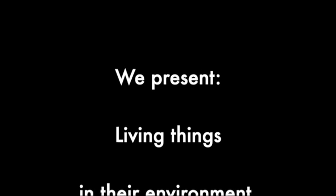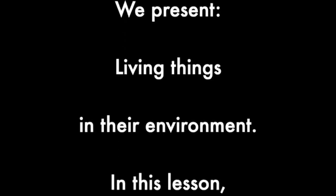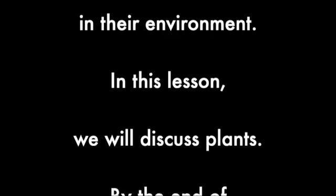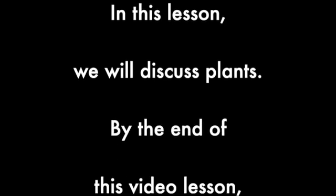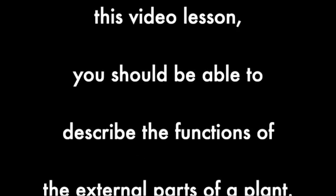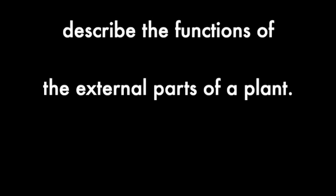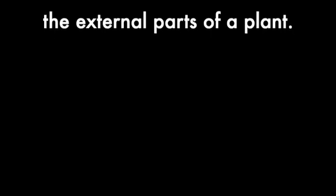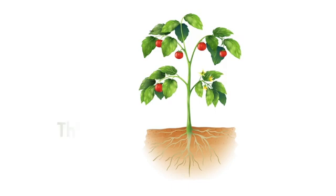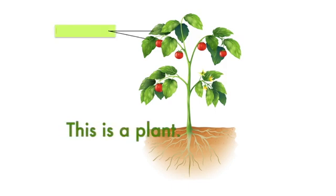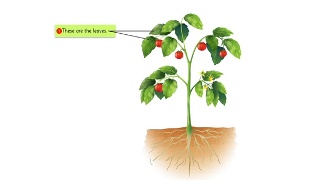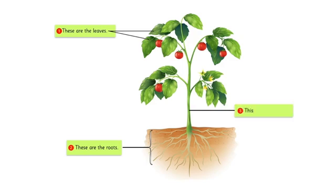We present living things in their environment. In this lesson we will discuss plants. By the end of this lesson you should be able to describe the functions of the external parts of a plant. This is a plant. These are the leaves, these are the roots, this is the stem.